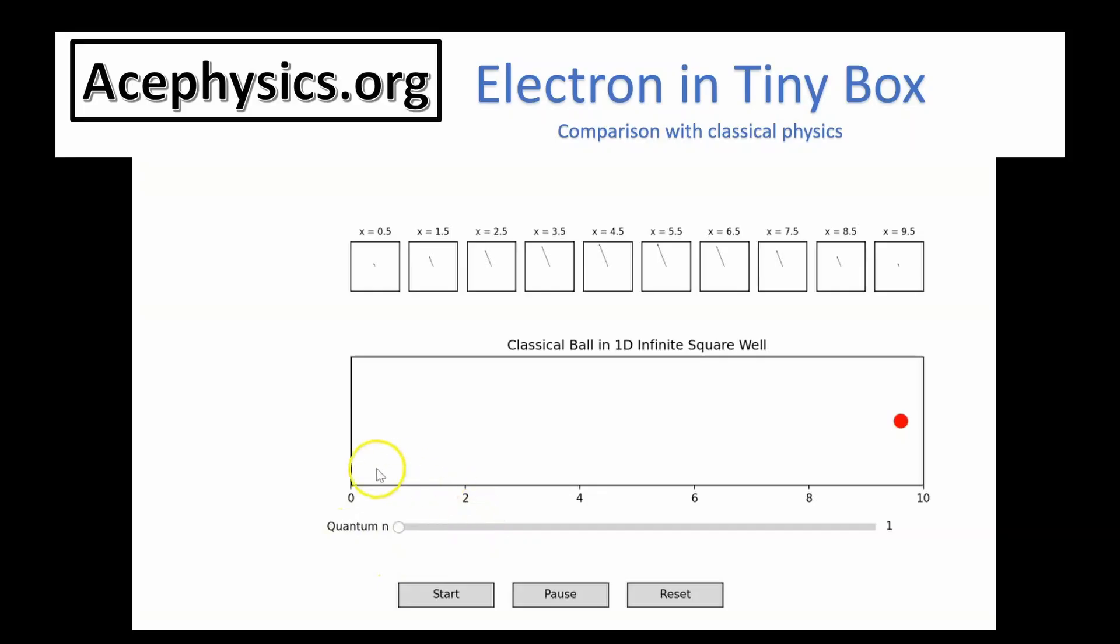I pause time. This slider, labeled N, sets the energy level. In quantum mechanics, energy isn't continuous. It comes in discrete steps, even if those steps are very small.